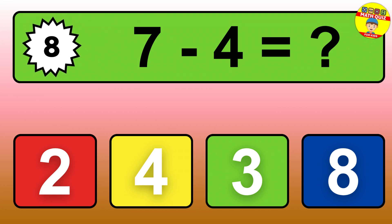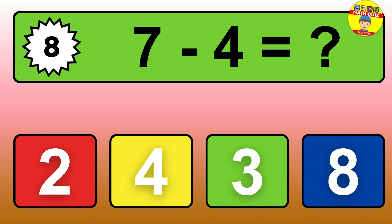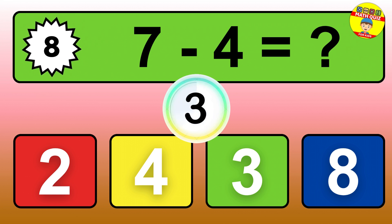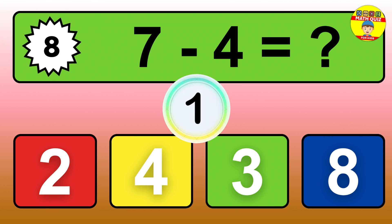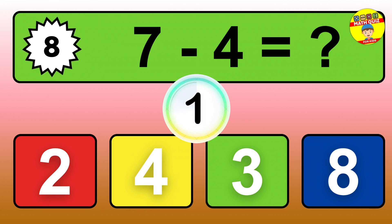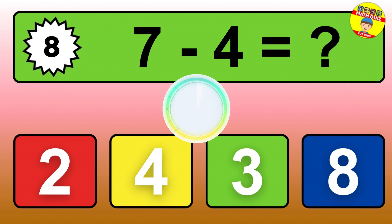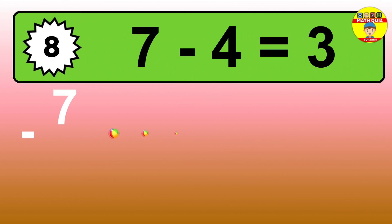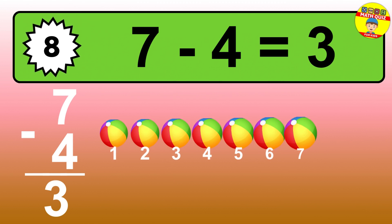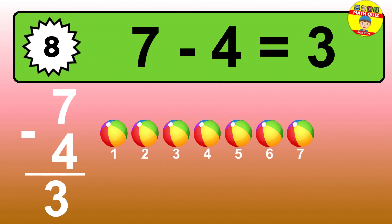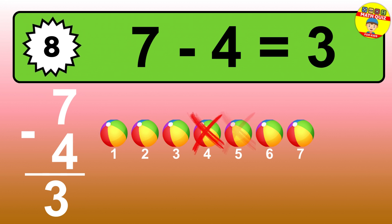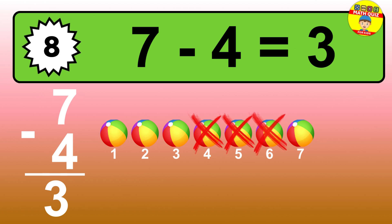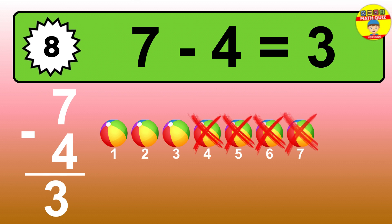Question eight: seven minus four equals what? So the answer is, seven minus four is three. Let's count it. One, two, three.